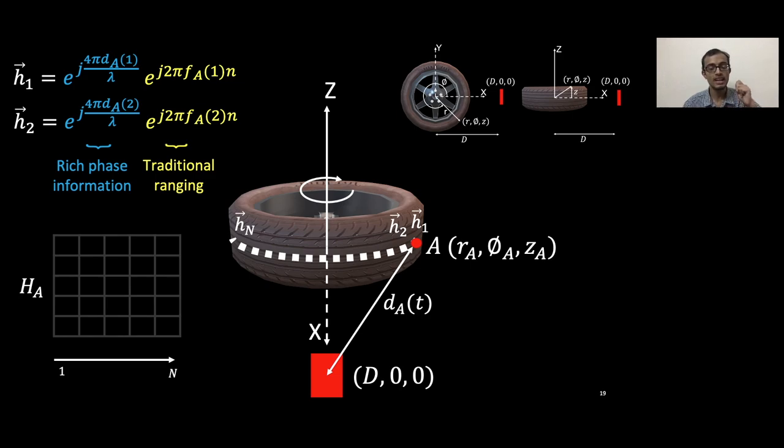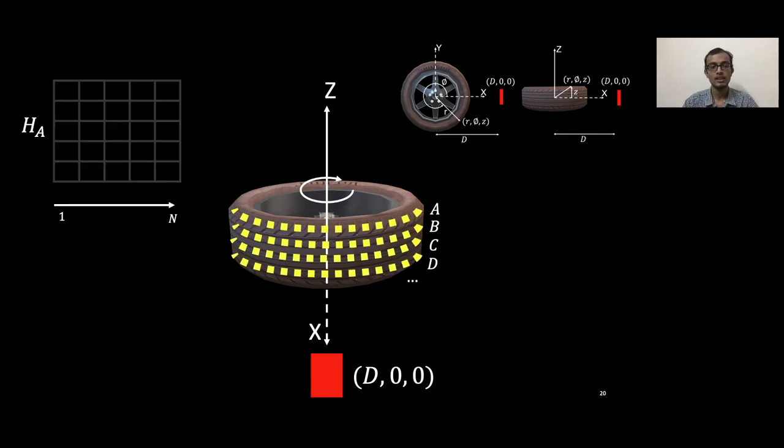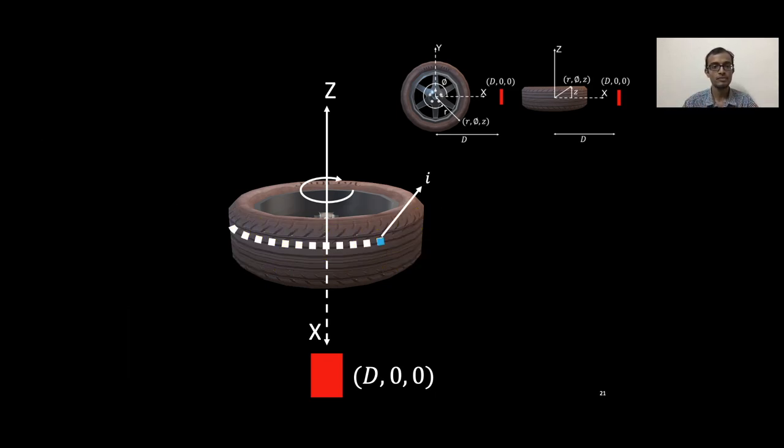Now there is not just one point, there are multiple points, so all of these superpose together with noise and result in the received matrix at the radar.